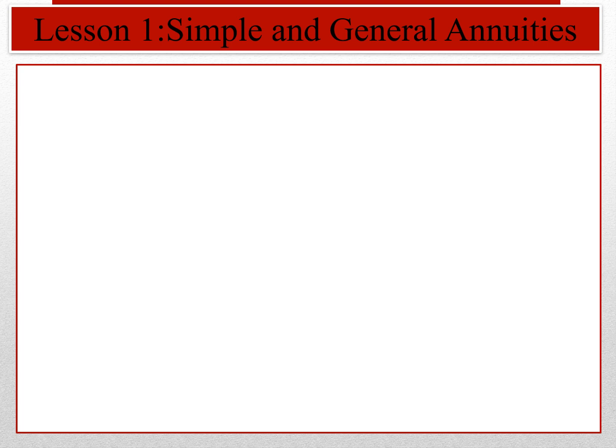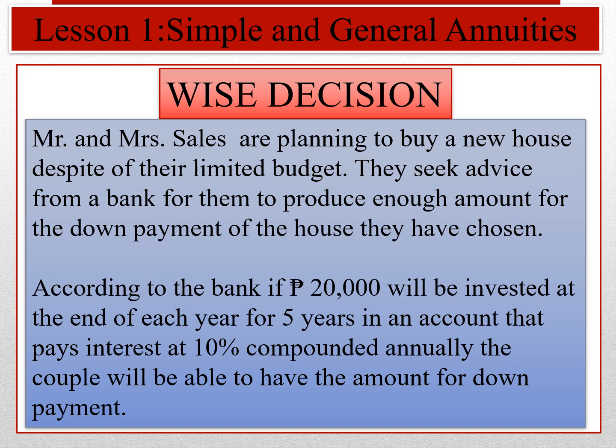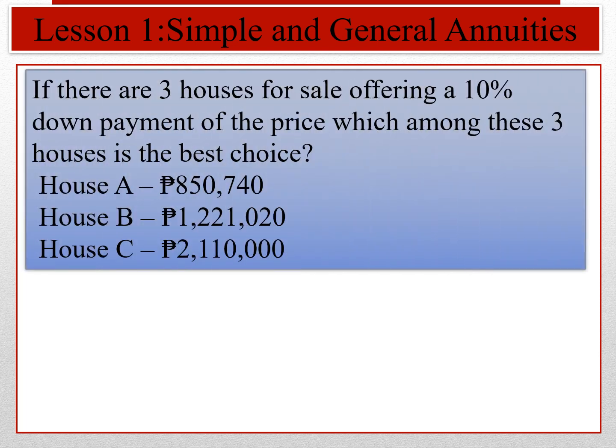For Lesson 1, our topic is simple and general annuities. Before I discuss our lesson, let's have a recall — Wise Decision. Mr. and Mrs. Sales are planning to buy a new house despite their limited budget. They seek advice from a bank to produce enough amount for the down payment. According to the bank, if 20,000 will be invested at the end of each year for five years in an account that pays 10% compounded annually, the couple will be able to have the amount for the down payment. If there are three houses for sale offering a 10% down payment of the price, which among these three houses is the best choice?